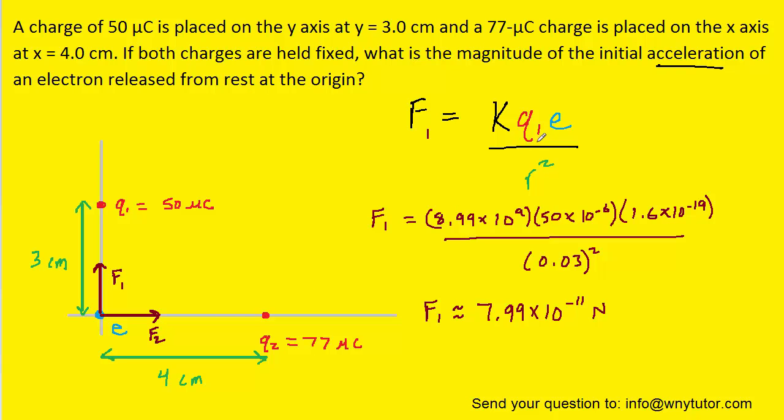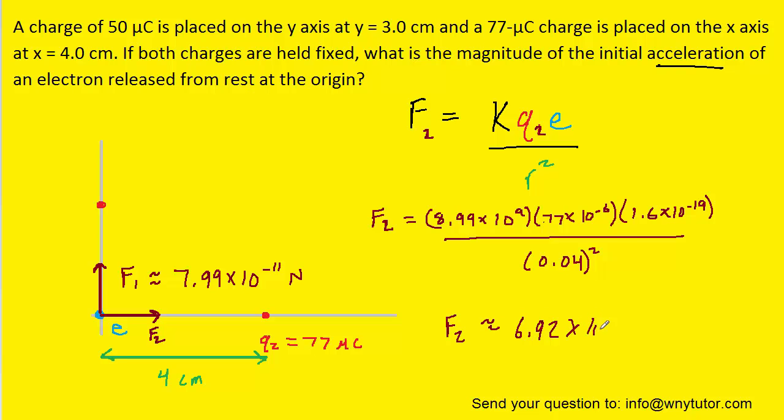We've plugged in all the known values to calculate force f2. We have the constant, this time using 77 microcoulombs because that's the charge on q2, the same charge on the electron, and the distance in meters. When we calculate this force, it equals approximately 6.92 times 10 to the minus 11 newtons.